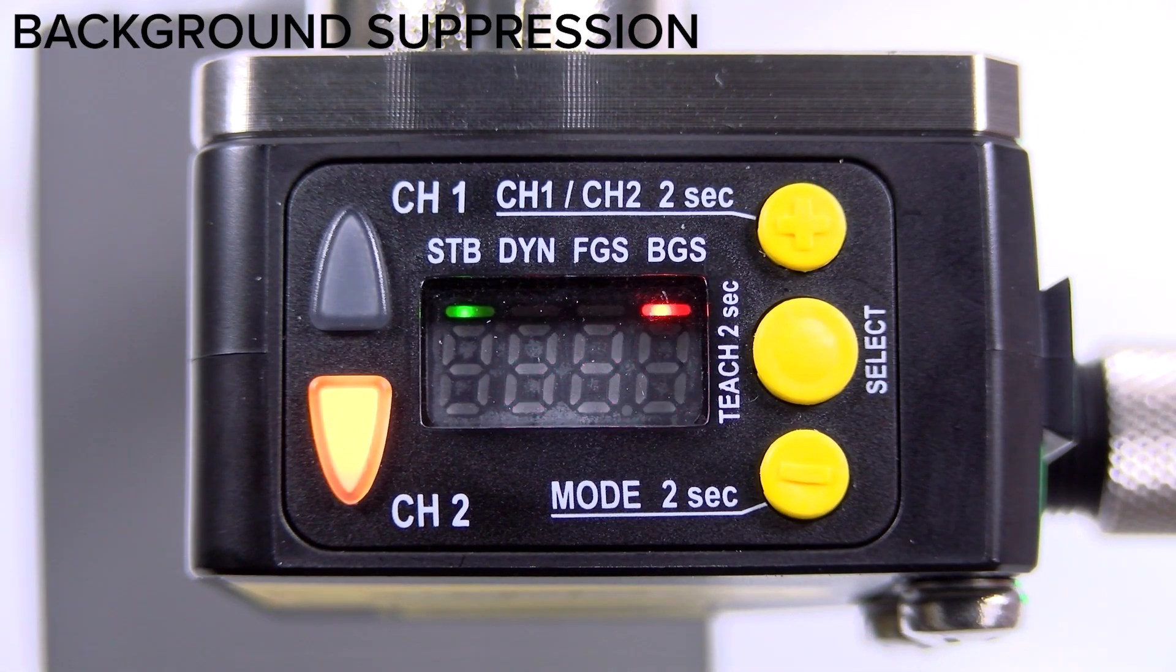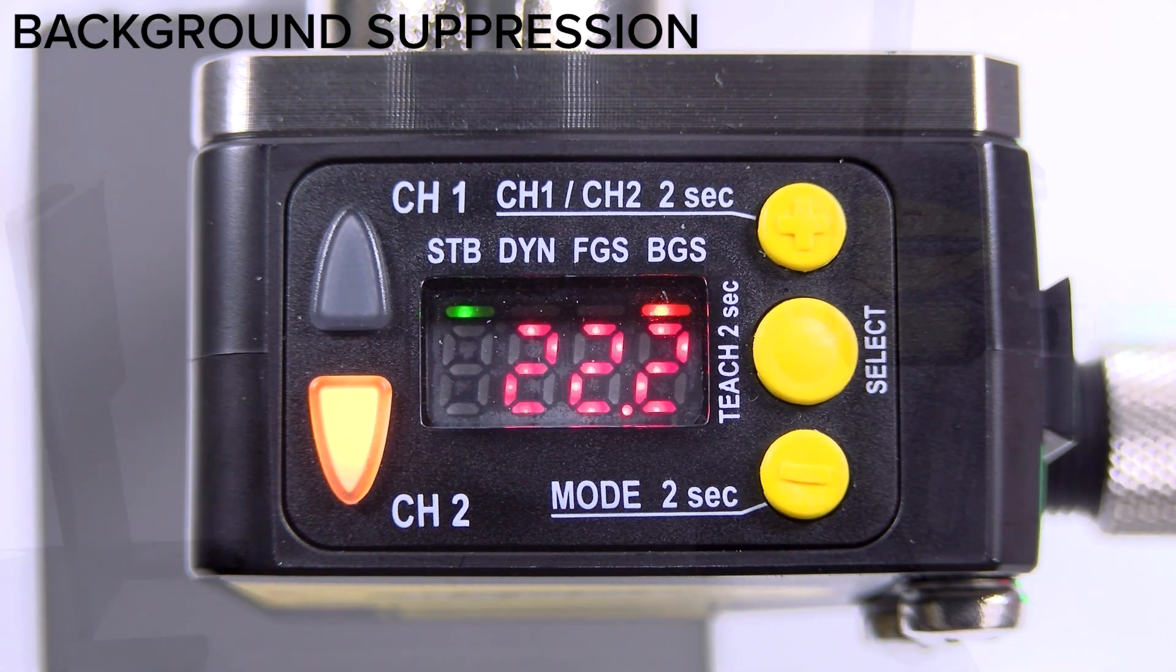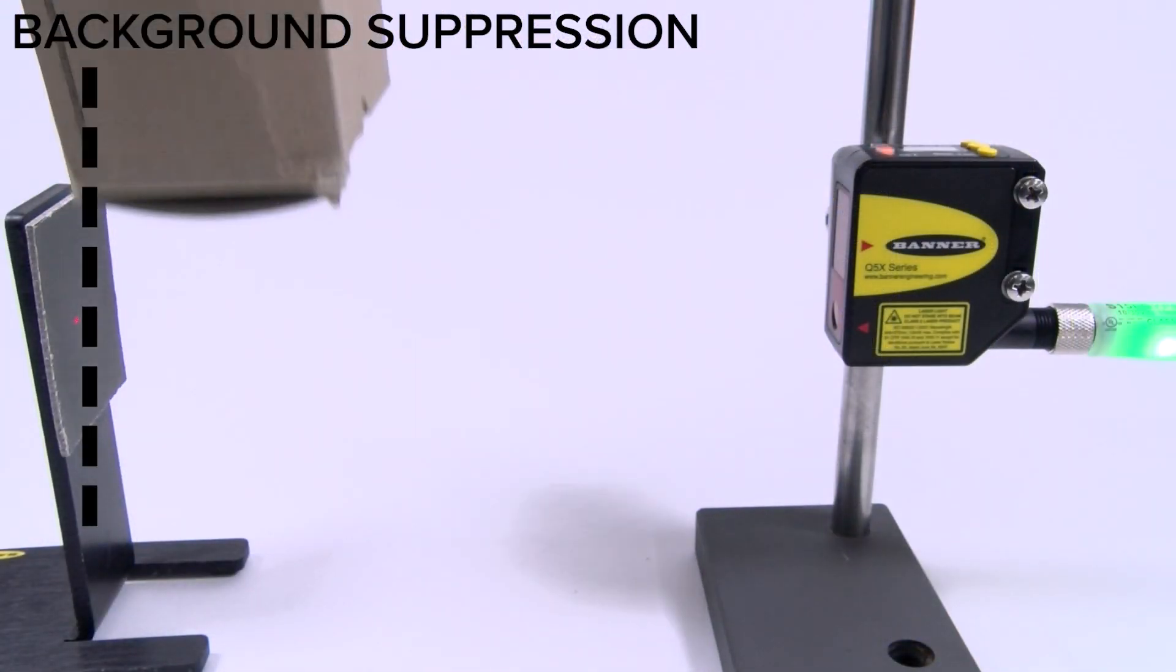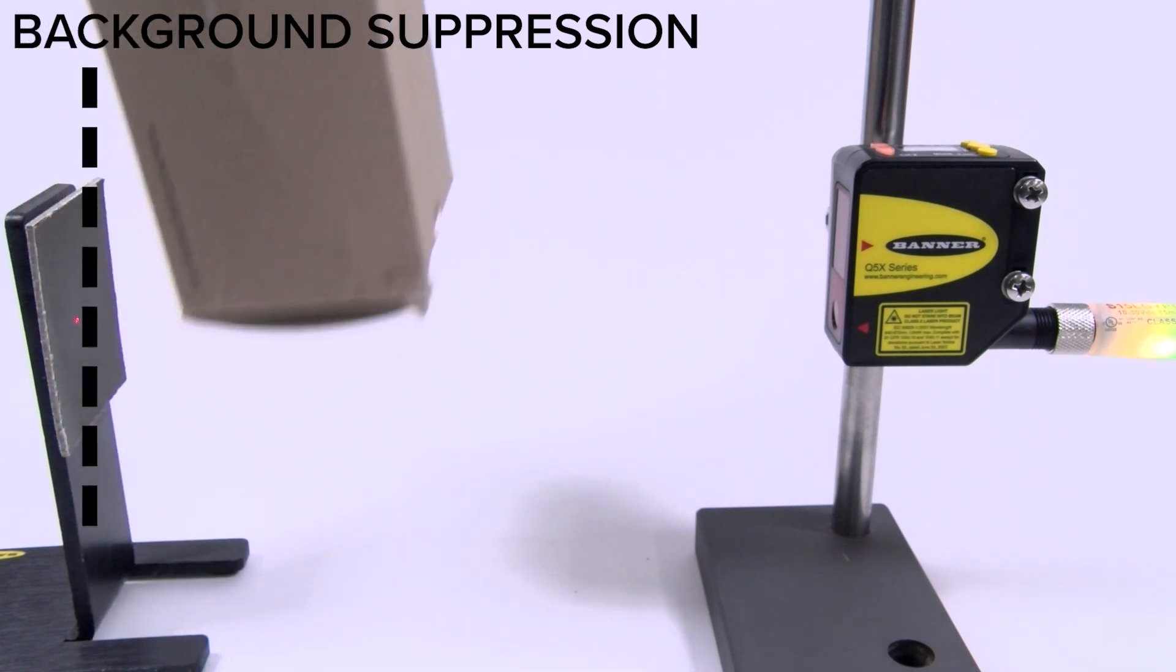Background suppression is used when you want to detect the target but ignore the background. For this mode, you will only need to teach one point and the switch point will be set just in front of the taught condition.